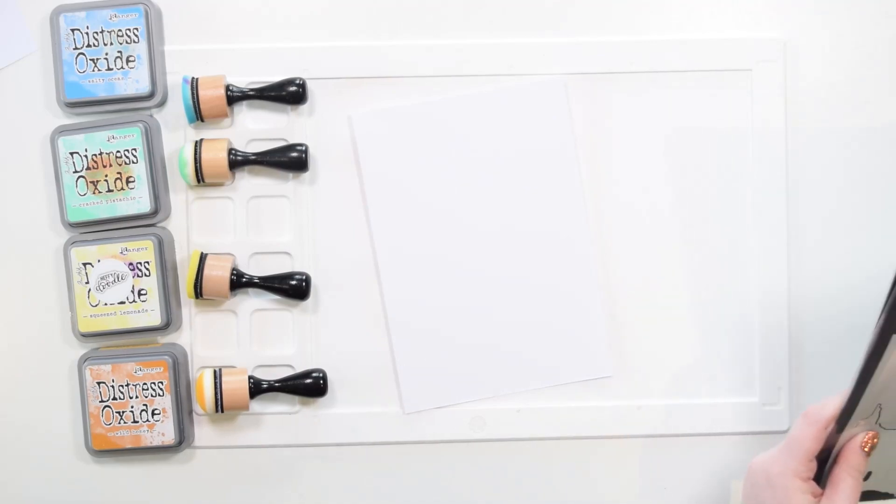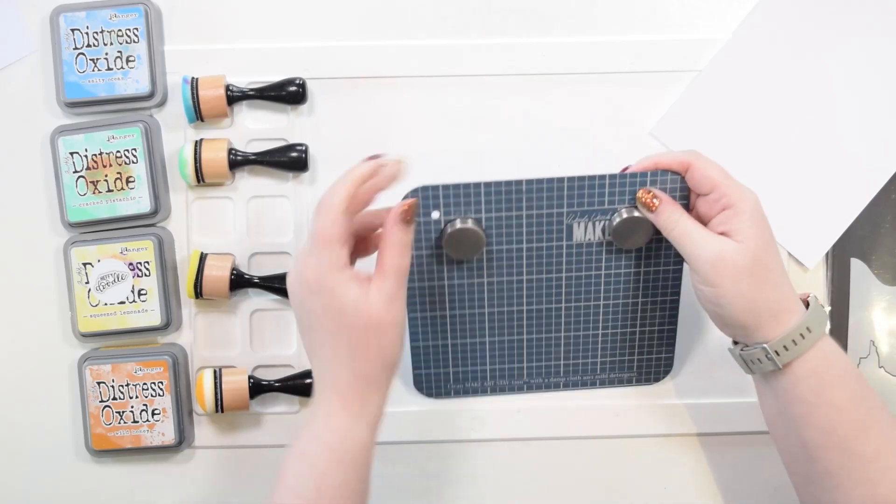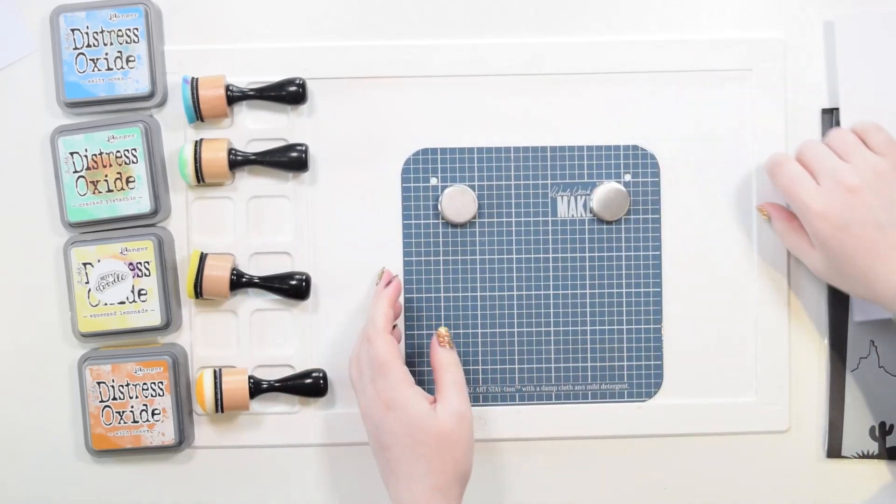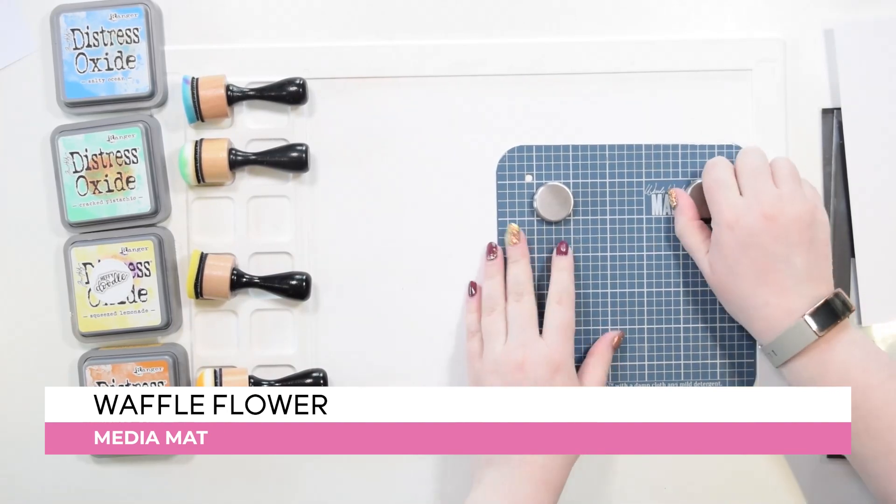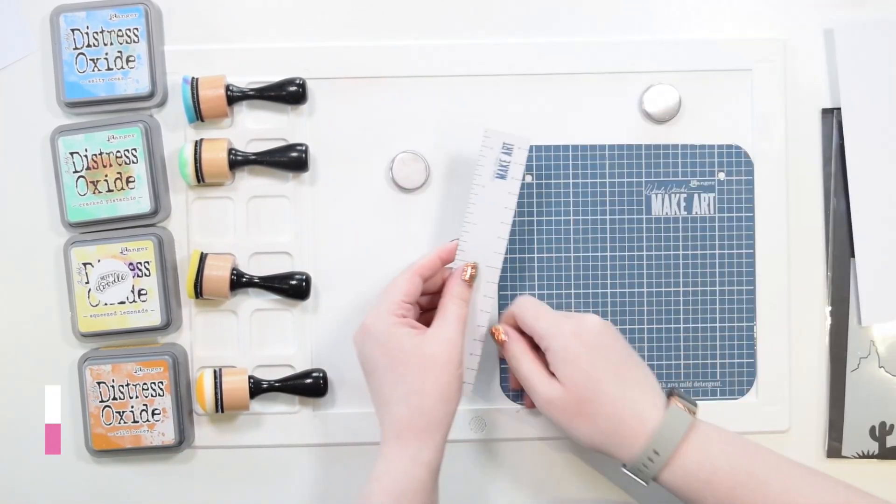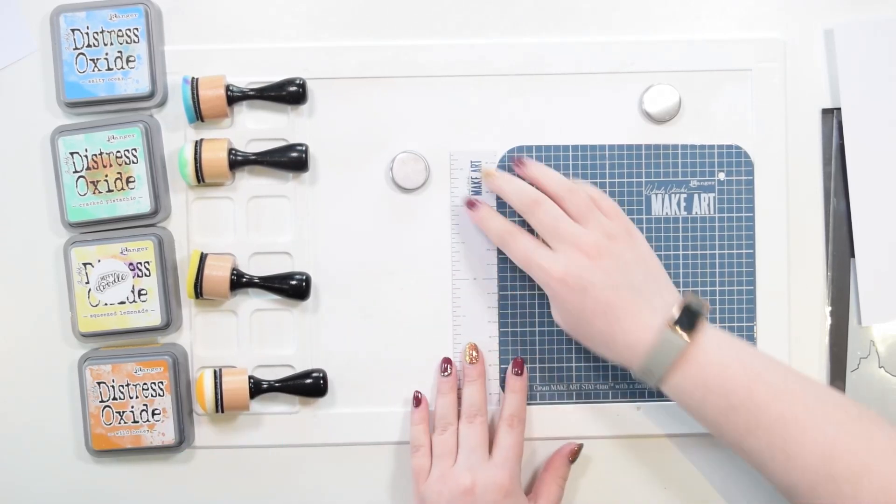I'm using a couple different tools here because I want the front of my card to match the card base underneath when you pull the slider tab. So here I'm using the Waffle Flower Media Mat and the Wendy Vecchi Make Art Station to line up my stencils on this first panel so I can repeat the process on my card base.